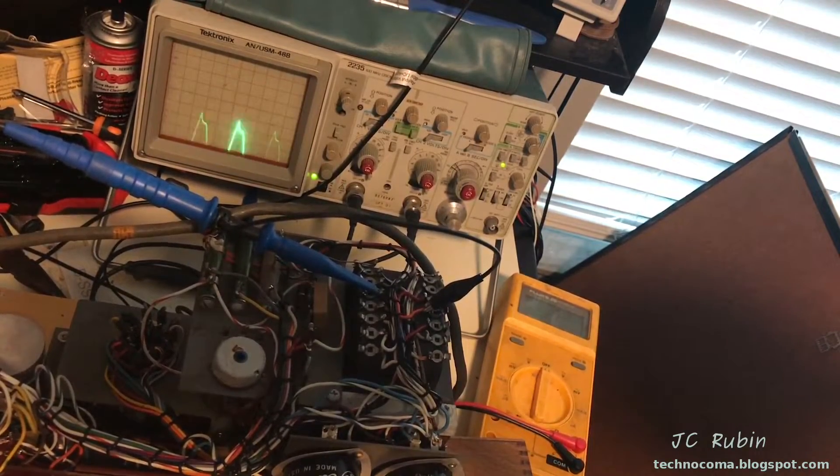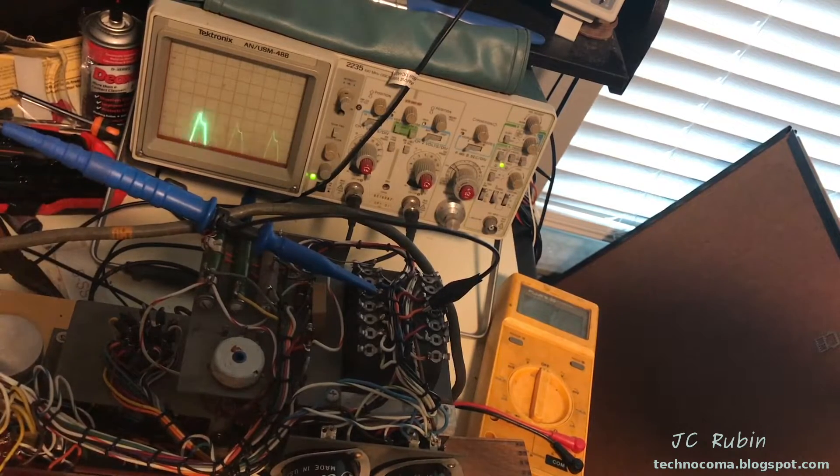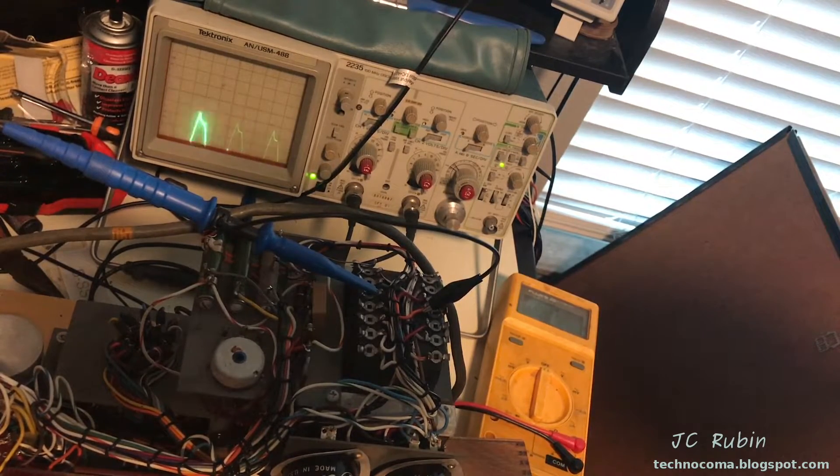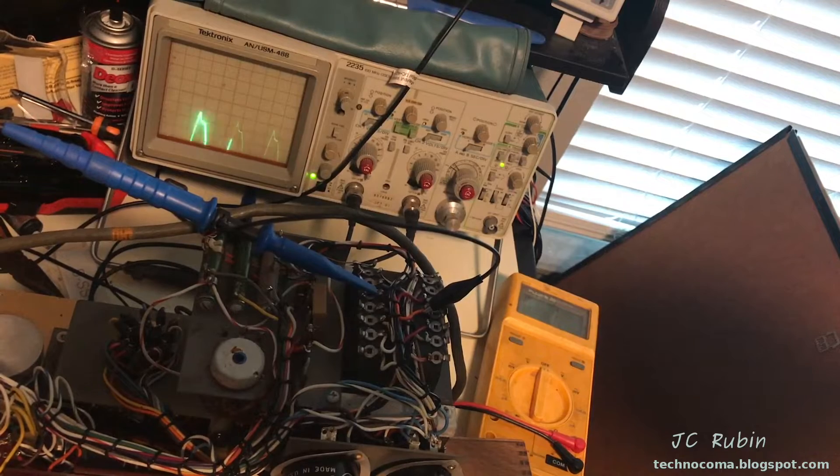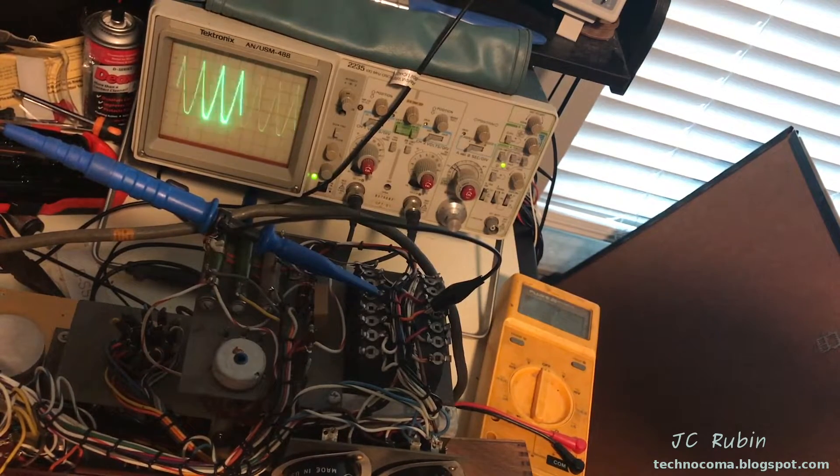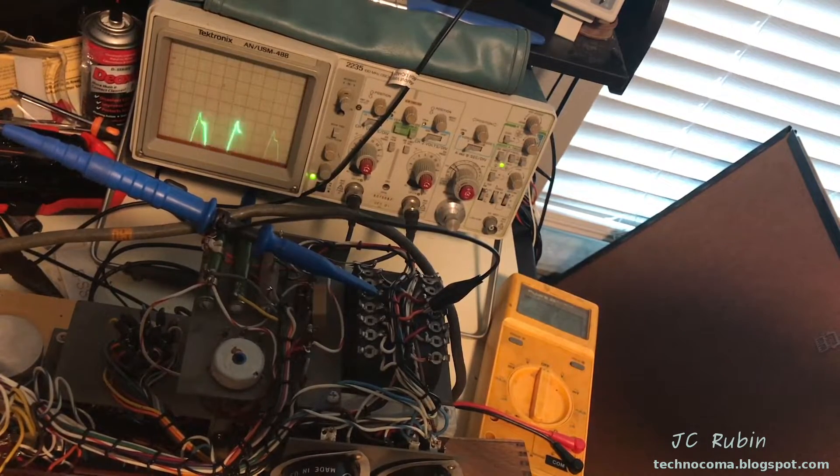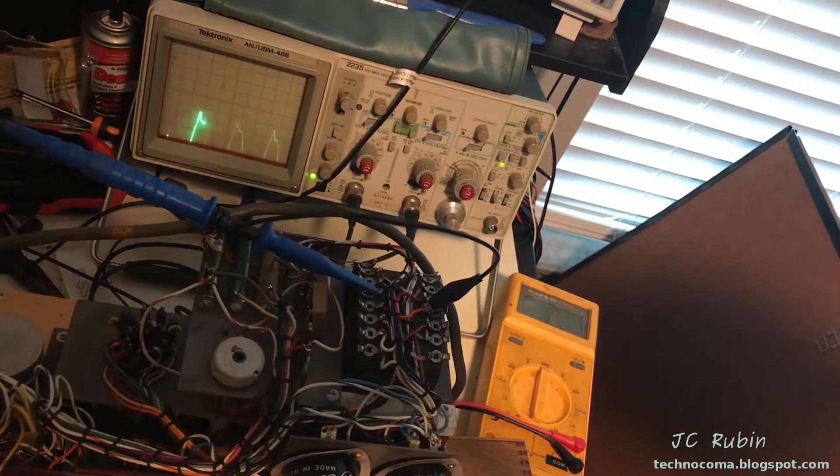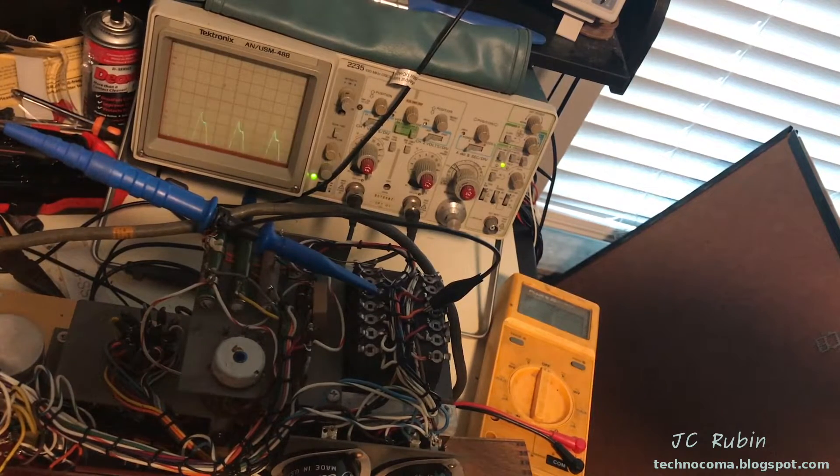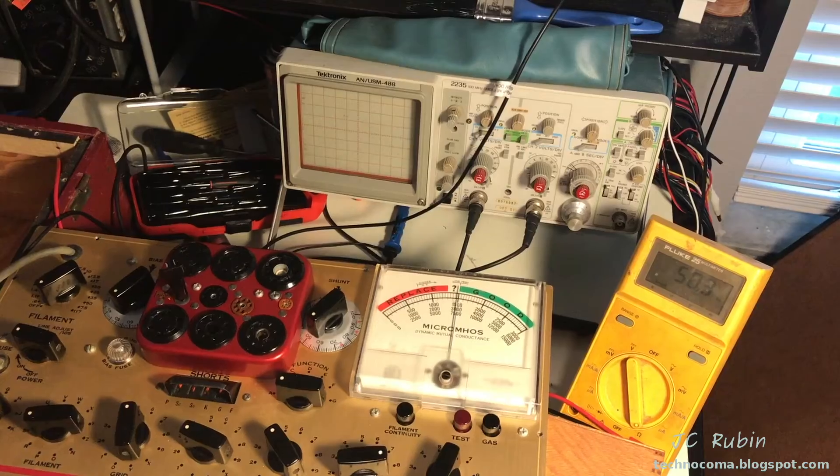Running the test again, this time on the taps for the transformer to check the balance of the 5Y3. I have everything set up, so I'm going to hit the test button from the bottom of the unit. We can see that it is evenly balanced, and that concludes that test. Everything looks good. Both tubes are healthy and don't need any replacement.